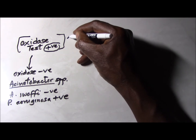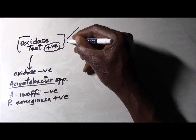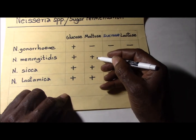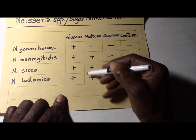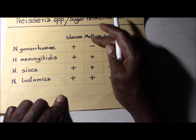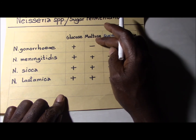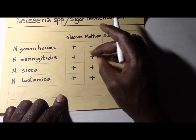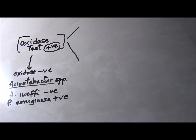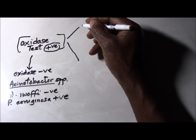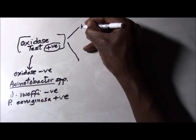The main point here is to go back to the table we had earlier and attempt a further breakdown based on maltose fermentation. You will see that three of the species ferment maltose — only Neisseria gonorrhoeae does not. So on the basis of maltose fermentation, we can have two groups: maltose fermenters and non-maltose fermenters. If the answer is yes, then we know we could be dealing with Neisseria meningitidis, Neisseria sicca, or Neisseria lactamica.